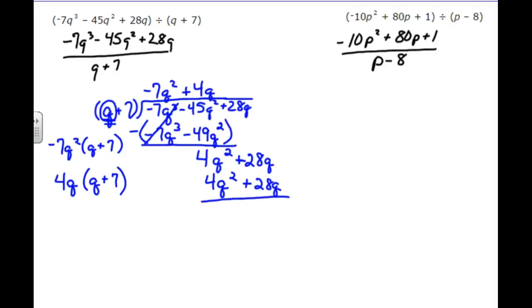At this point, we're subtracting all of that from what's above it, and you should recognize by now that if you are subtracting the exact same thing, they will cancel out and you will have a remainder of 0. When you have a remainder of 0, there will be no fraction on the end of your answer. Your answer is negative 7q squared plus 4q.